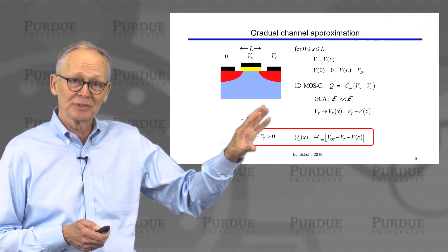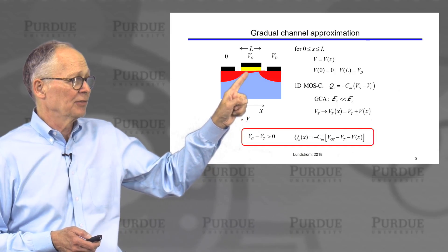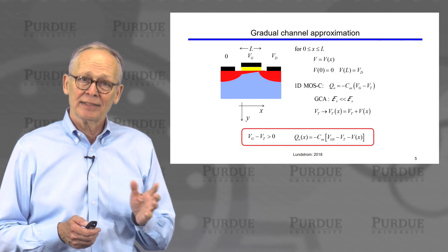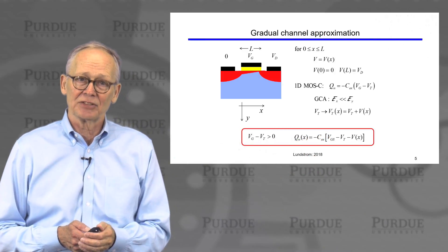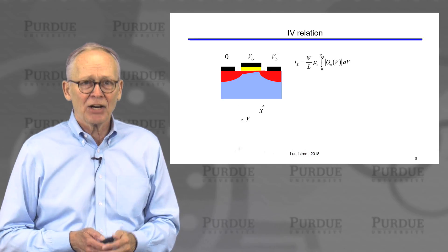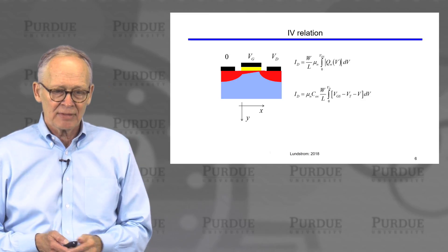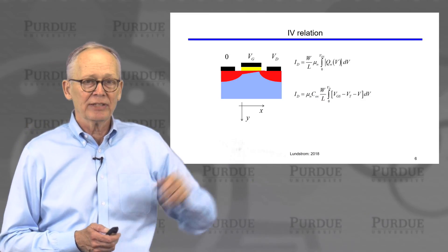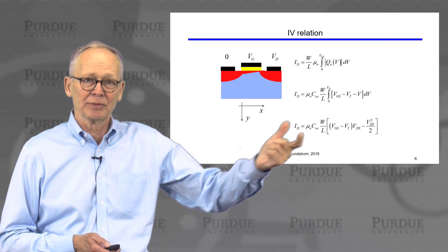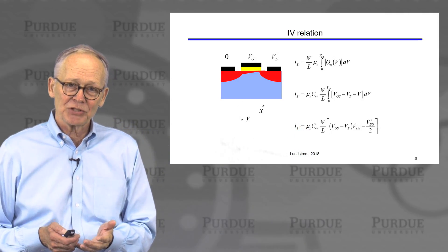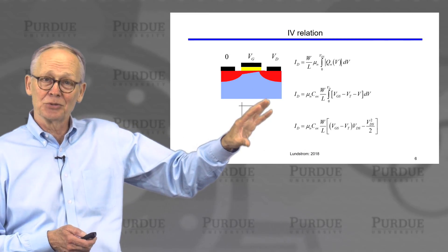We now have a simple expression extended to treat the MOSFET under the gradual channel approximation. The inversion layer charge varies along the channel — there's more charge at the source where the voltage is low, and less at the drain where the voltage is high. Plugging this expression for Q into our IV relation and performing the integral — which is straightforward — here's the result: an expression for the IV characteristic of the MOSFET.